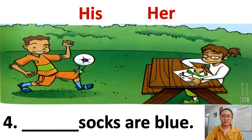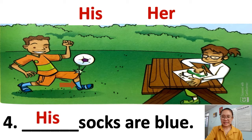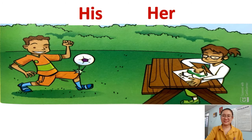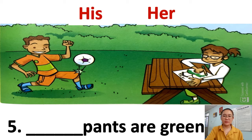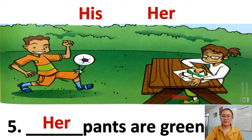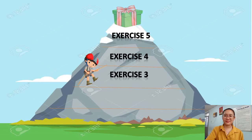Number four: socks are blue. Let's find the blue socks — yes, they belong to the boy, so we use 'his'. His socks are blue. Well done! Number five: pants are green — yes, they belong to the girl, so we use 'her'. Wow, we finished Exercise 3!